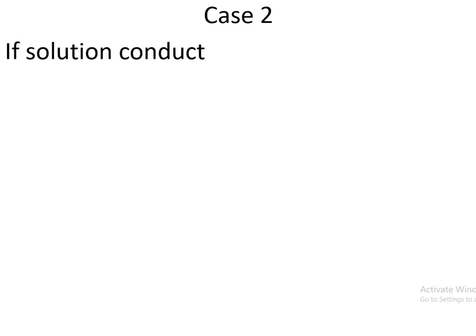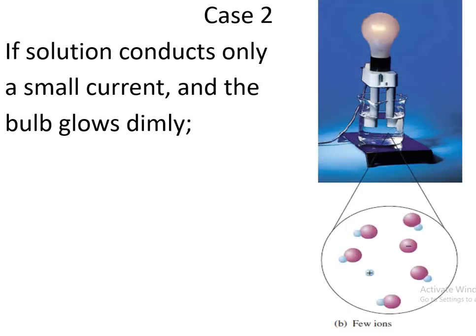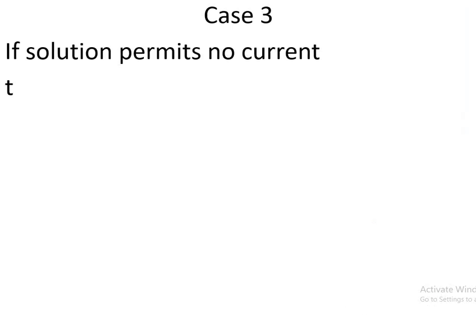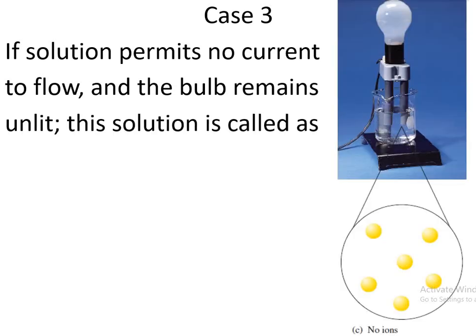Case 2: If a solution conducts only a small current and the bulb glows dimly, this solution is called a weak electrolyte. There are few charge carriers, so the bulb glows very dimly because only a very small amount of current passes through the circuit. Case 3: If a solution permits no current to flow and the bulb remains unlit, this solution is called a non-electrolyte.